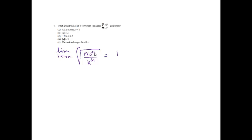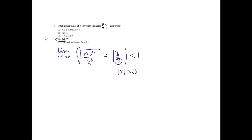The nth root of n has a limit of 1, and the nth power and nth root cancel, so I'm left with 3 over x. The absolute value of 3 over x must be less than 1, meaning the absolute value of x must be greater than 3. That is exactly choice D.